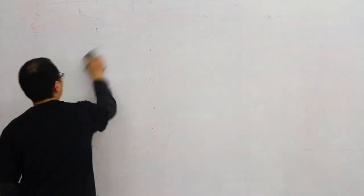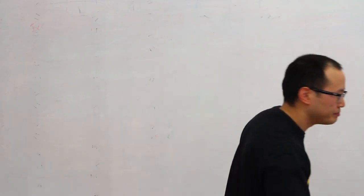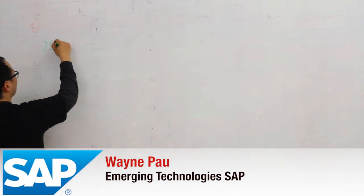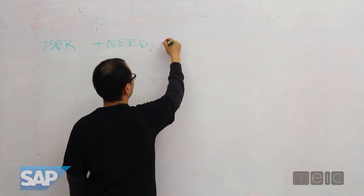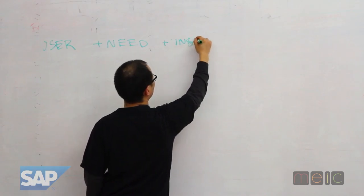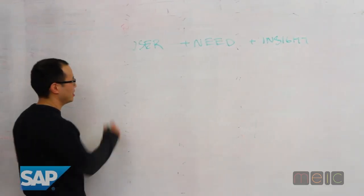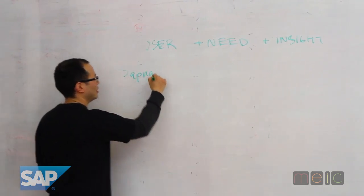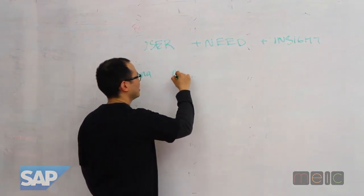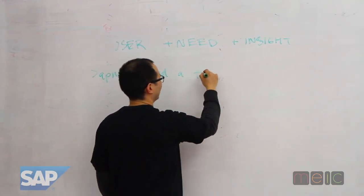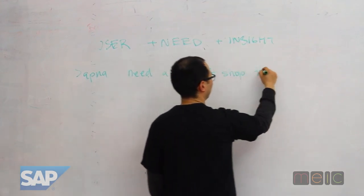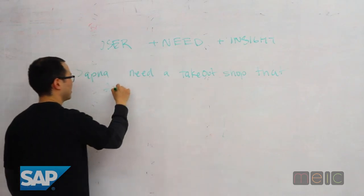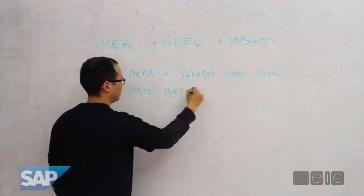Okay, so point of view statement. I guess we could go to the Mad Libs version, right? So basically, user plus need insight. What I would say instead of user, I would say Sapna needs a takeout shop that fits into her schedule and is affordable.